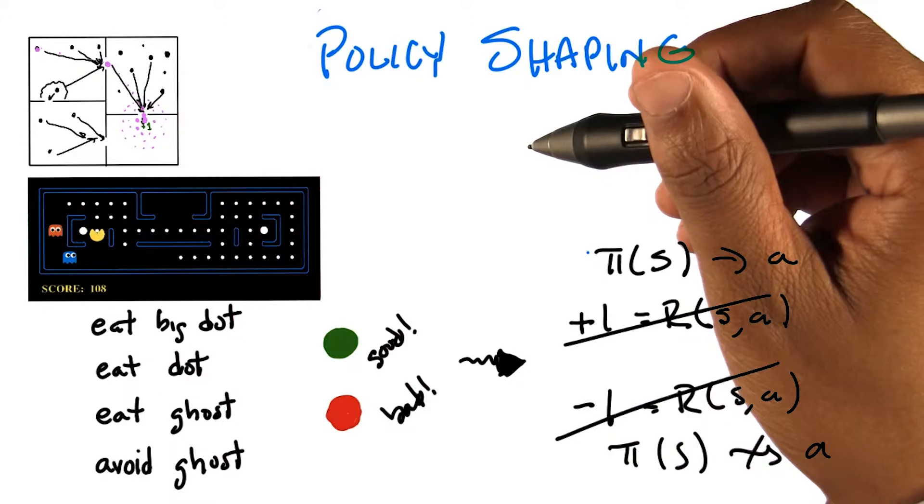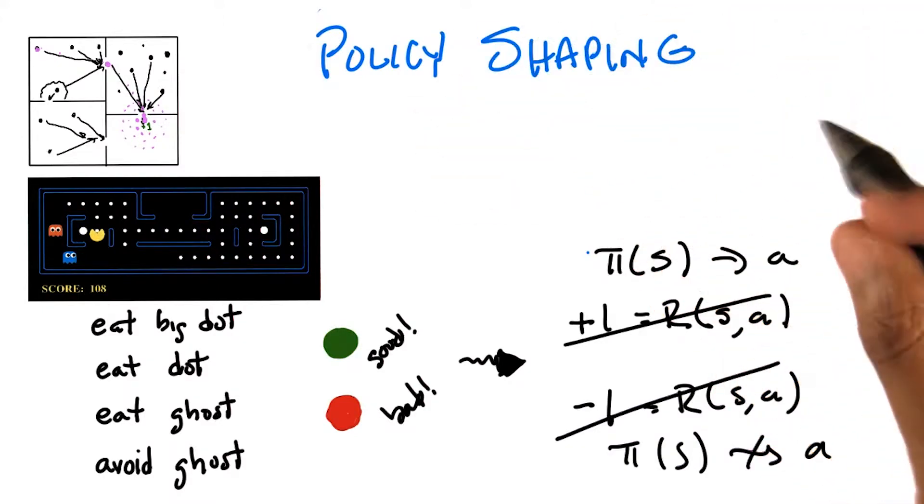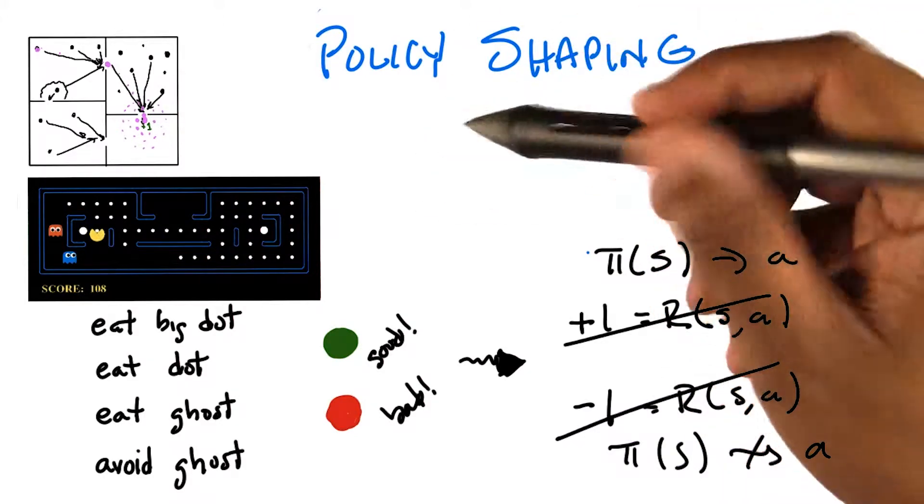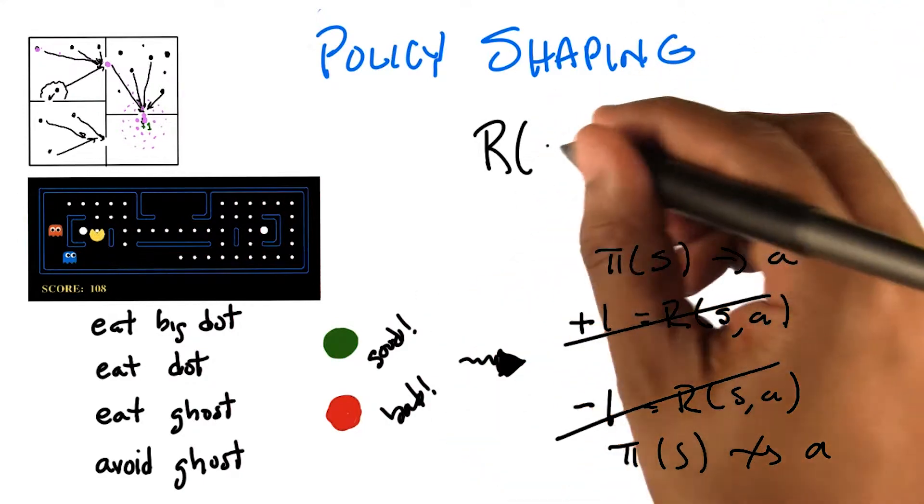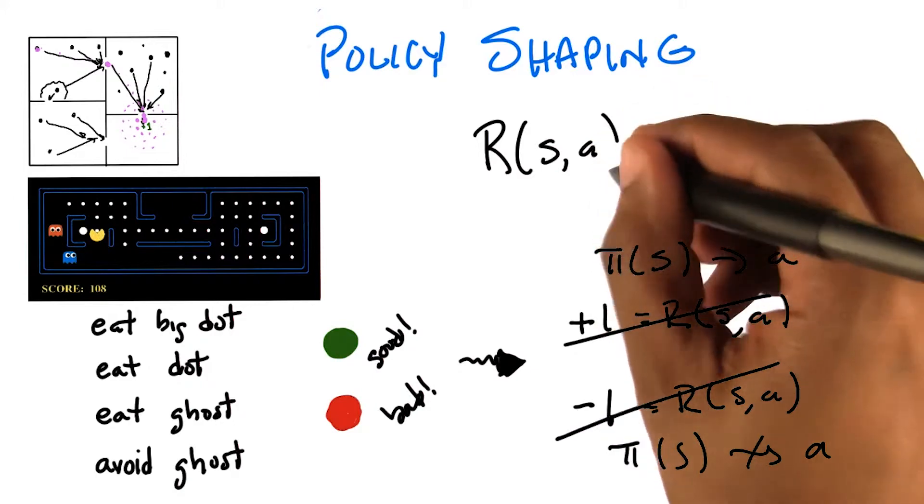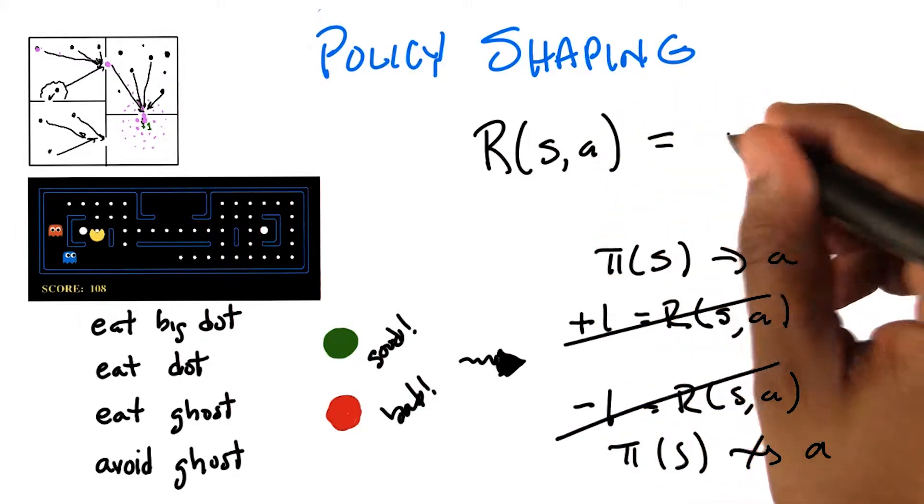Right. So think about it this way. There's actually, I think, a direct way of doing this. When you do policy shaping, what have you actually done? What you've actually done is you've taken whatever the reward function was in, say, some particular state, or some particular action, and let's say it was zero.